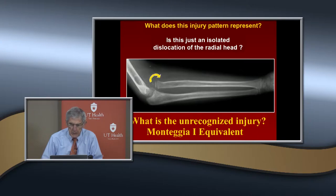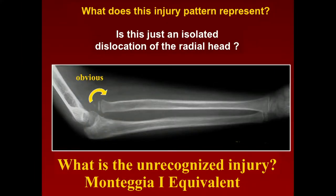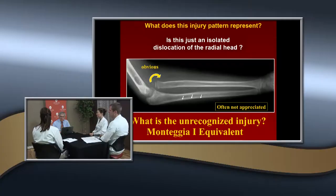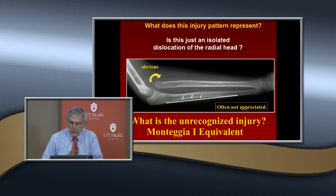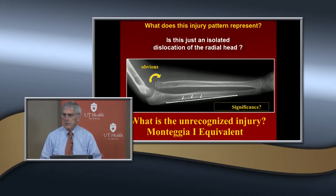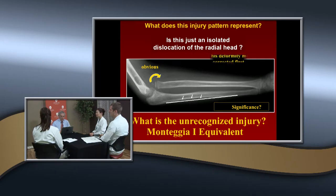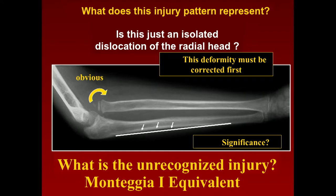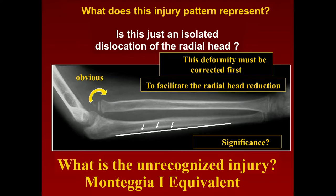So the unrecognized injury: the radial head dislocation is obvious, but the ulnar bowing is often not appreciated. How should the ulna look on the posterior aspect? Entirely straight — it should be a straight line. Here you can see there's a bow. If you have plastic deformation of the ulna, you need to recognize this because if you don't correct that deformity, you can't get the radial head back in.